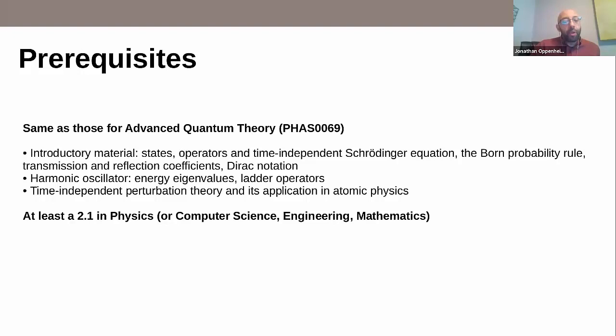Let me quickly say the prerequisites. Most of our students come from a physics background. You should have at least a 2.1. Some people do come from a computer science, engineering, or mathematics background. Those that do should make sure they've taken a sufficient level of quantum theory in their degree. The prerequisites for the MSc are the same as for the core modules. If you go to the prerequisites for advanced quantum theory, you'll see the sorts of things you need. You should have taken a course at your university covering topics like perturbation theory, Dirac notation, harmonic oscillators, solving the time independent Schrödinger equation, the Born rule, et cetera.